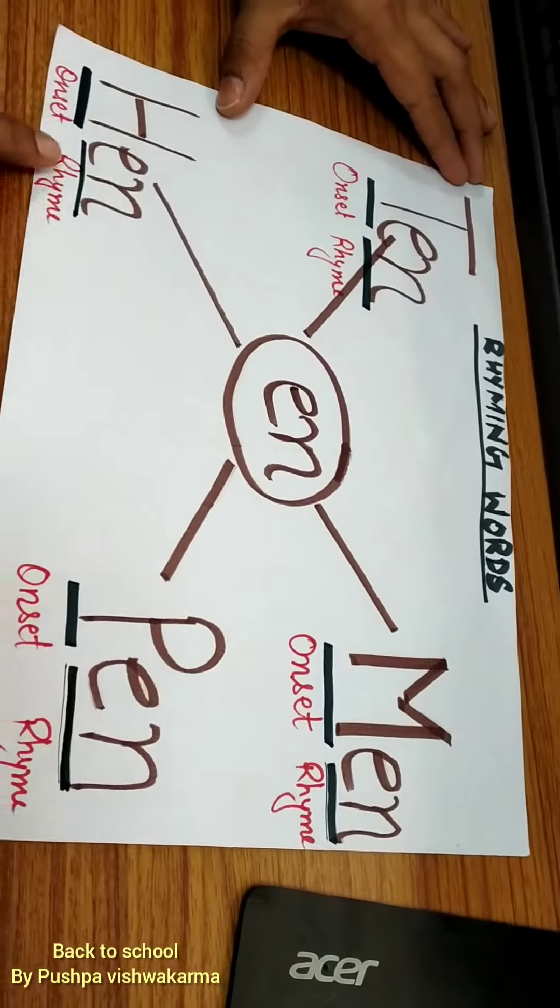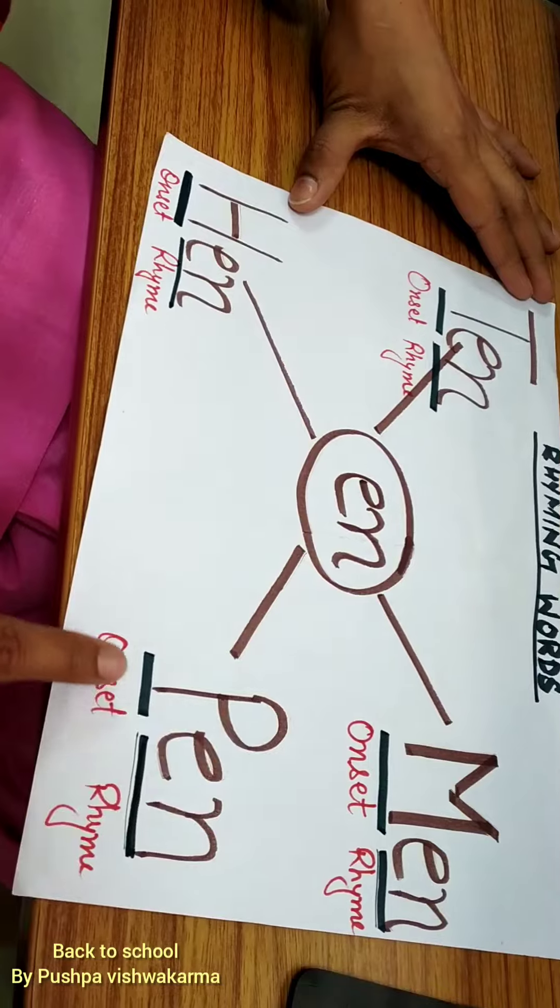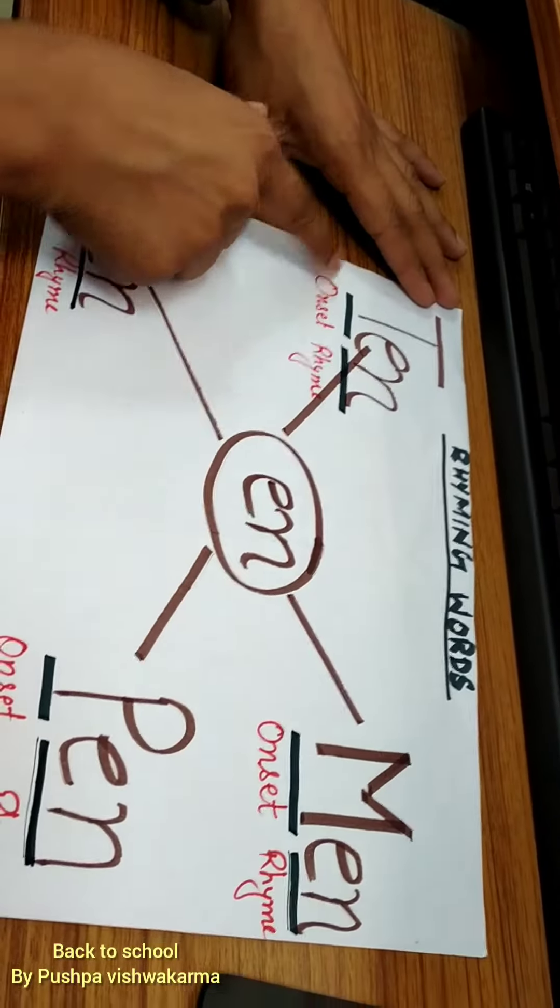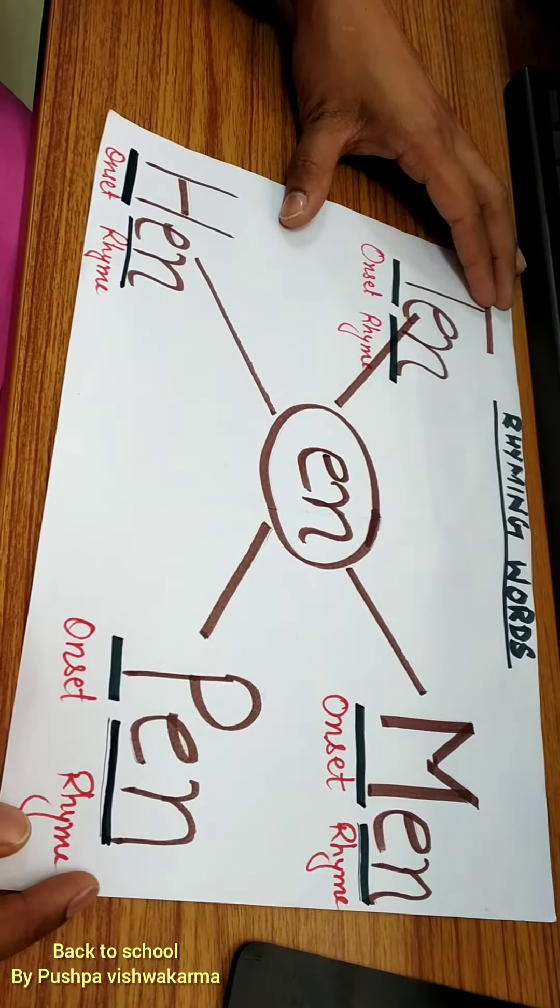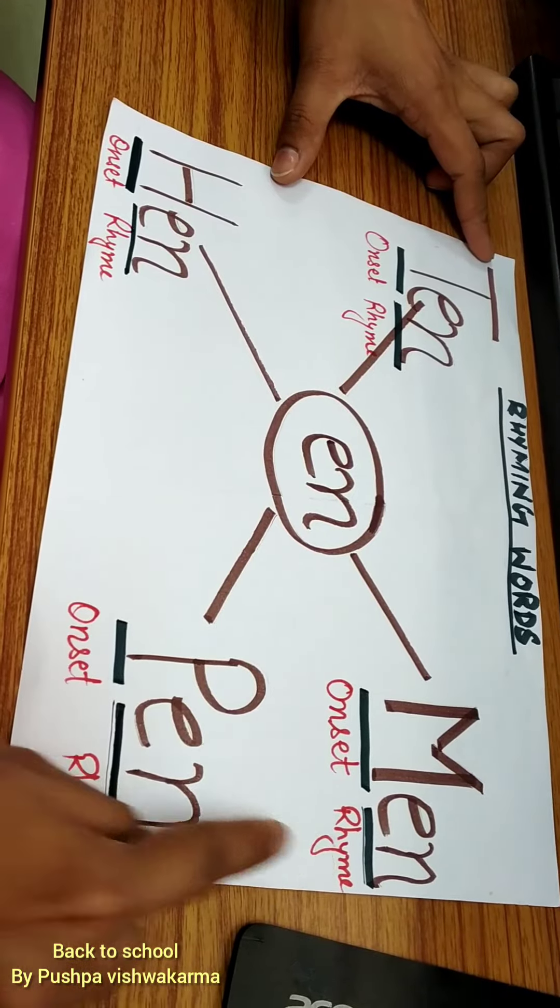EN is rhyme and the letters M, P, H, and T are onset. So we can teach students how to make more rhyming words by changing the onset and keeping the rhyme.